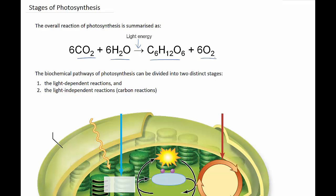Photosynthesis is actually a biochemical pathway that occurs in a series of steps, with each step in the pathway being catalyzed by a specific enzyme. The biochemical pathways of photosynthesis can be divided into two distinct stages: the light-dependent reactions and the light-independent reactions.